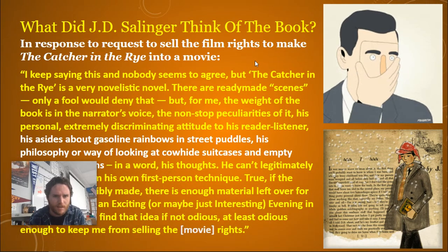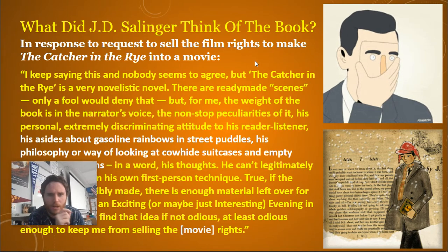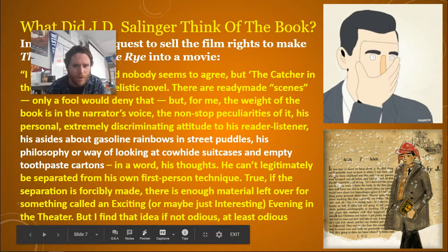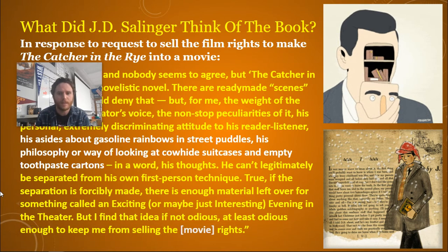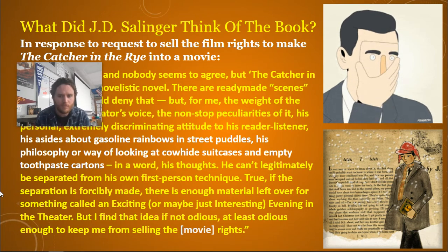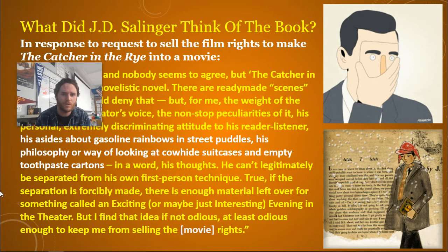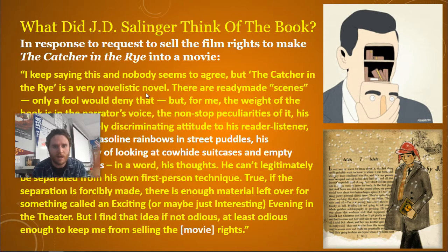In response to requests to sell the film rights to make The Catcher in the Rye into a movie, Salinger said: 'I keep saying this and nobody seems to agree, but The Catcher in the Rye is a very novelistic novel. There are ready-made scenes — only a fool would deny that. But for me, the weight of the book is in the narrator's voice, the nonstop peculiarities of it, his personal, extremely discriminating attitude to his reader-listener, his asides about gasoline, rainbows, and street puddles, his philosophy or way of looking at cowhide suitcases and empty toothpaste cartons — in a word, his thoughts. He can't legitimately be separated from his own first-person technique. If the separation is forcibly made, there is enough material left over for something called an exciting or maybe just interesting evening in the theater, but I find that idea at least odious enough to keep me from selling the movie rights.' That's what J.D. Salinger said. He calls it a very novelistic novel — even though there are scenes that could be made into a movie, it's very much a product of text.